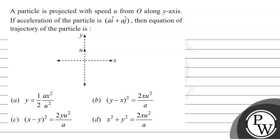Hello, Baccio. Let's read this question. The question says that a particle is projected with speed u from O along y-axis. If acceleration of the particle is a i cap plus a j cap, then equation of trajectory of the particle is: